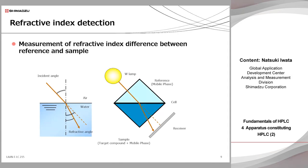A refractive index detector — so-called RID — employs the light refraction phenomenon on a gas-liquid surface. The figure on the right side shows a cross-section of the RID cell that has two separated chambers: one is a reference cell filled with mobile phase, and the other is a sample cell connected to the flow path of HPLC. Before analysis, the reference cell is completely displaced with fresh mobile phase by switching the flow path to the HPLC side, then the flow path is switched back. When the target compound does not exist in the sample cell, both cells are filled with the same mobile phase so that no refraction occurs and the light beam proceeds straightly. Then the target compound reaches the sample cell, the light beam is bent due to the change of refractive index, and the RID can detect this change.